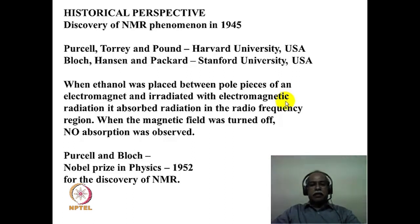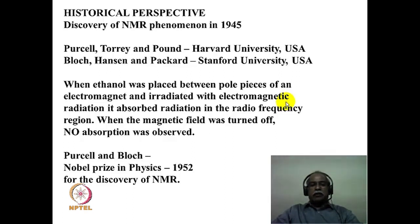The experiment they performed was very simple. They placed a sample of ethyl alcohol between the pole pieces of an electromagnet and irradiated it with electromagnetic radiation. They observed that the sample absorbed the electromagnetic radiation in the radio frequency region when the magnet was turned on, but there was no absorption when the magnet was turned off. They concluded they were studying a magnetic property of the sample. Purcell and Bloch were awarded the Nobel Prize in Physics in 1952 for the discovery of the NMR phenomenon, which was then developed into NMR spectroscopy for structure determination.